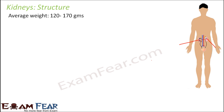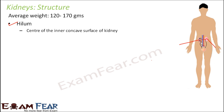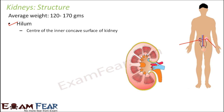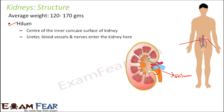Now let us discuss each part inside the kidney. The first is the hilum — a notch-like structure on the inner concave side of the kidney. It is the center of the inner concave surface of the kidney. The ureter, blood vessels, and nerves enter the kidney at the hilum.